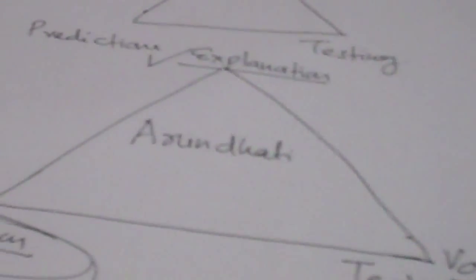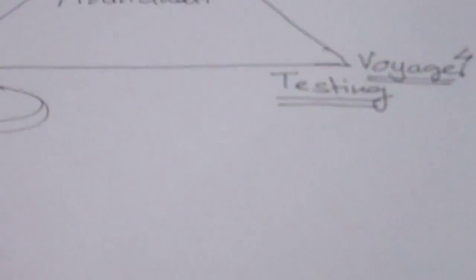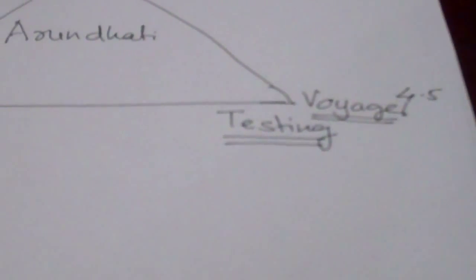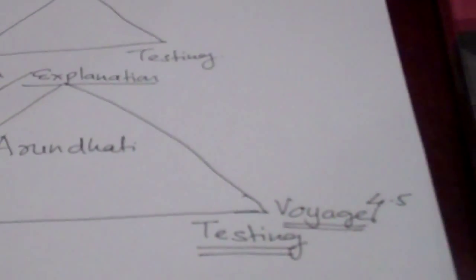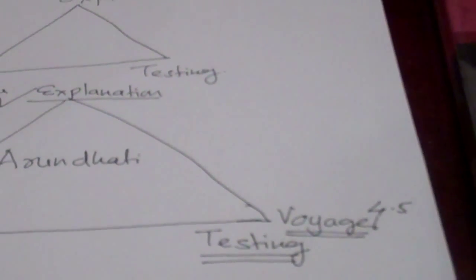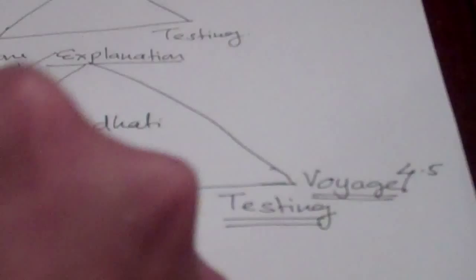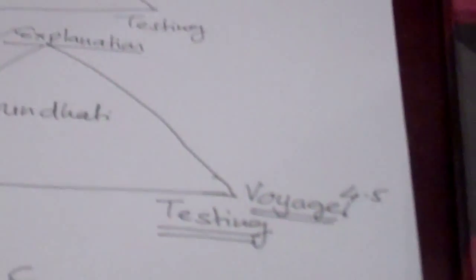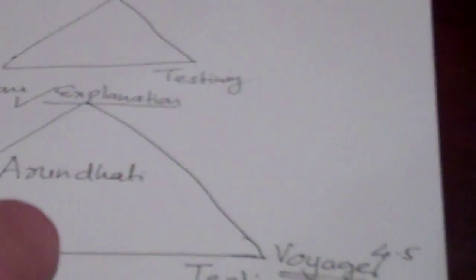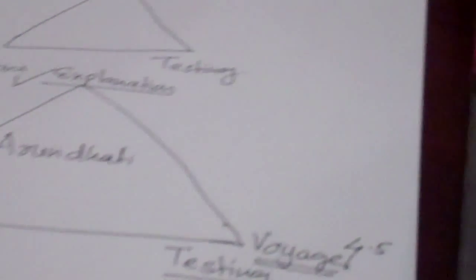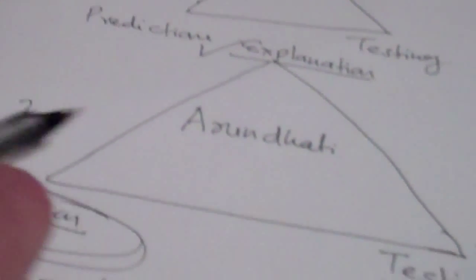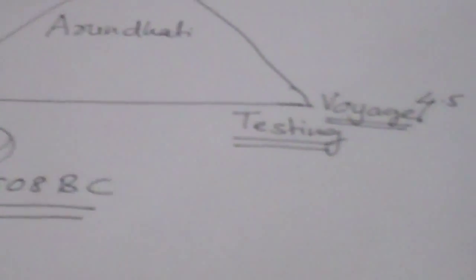And what did we find? When we take that explanation, Arundhati walking ahead of Vasishtha, and then test it using the astronomy software, we find that a time period beginning with 11091 BC and until 4508 BC, this was the time period when anyone observing the night sky, when Arundhati and Vasishtha were visible, they would have seen Arundhati walking ahead of Vasishtha.